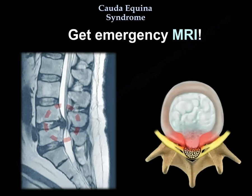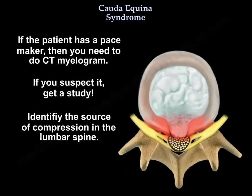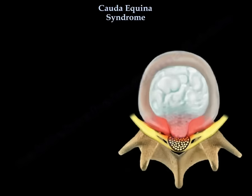When you suspect Cauda Equina Syndrome, you should perform a digital rectal exam and test the peri-anal sensation. Get an emergency MRI. The MRI should be ordered and read urgently, and the patient will likely need to be admitted for completion of the workup. If the patient has a pacemaker, you need to do a CT myelogram instead. Identify the source of compression in the lumbar spine.